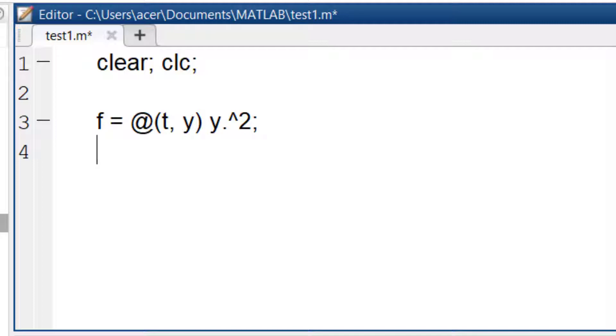f equals at sign t comma y, y to the power of 2. Two important notes here. Always vectorize your equation. And when you are defining this function, always make both t and y the independent variables, even if t is unused.